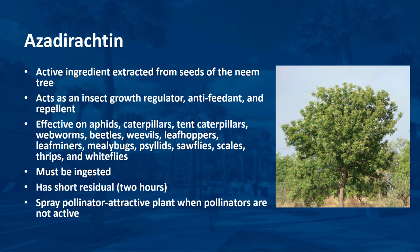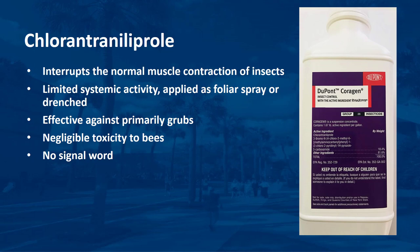Azadirachtin has shown no effect on worker honey bees. Azadirachtin products can be safely used at any time to control pests on plants that are not attractive to pollinators. However, on pollinator-attractive plants, they should be sprayed during late evening, night, or early morning when pollinators are not present, to minimize contact with adult bees that could potentially bring azadirachtin back to the nest where larvae are present. Many azadirachtin products are OMRI listed. Chlorantraniliprole interrupts the normal muscle contraction of insects, resulting in paralysis and death. It has limited systemic activity and can be applied as a foliar spray or through the soil. It is labeled against ornamental pests, primarily grubs. Chlorantraniliprole has negligible toxicity to bees and has no direct impact on natural enemies, so it is compatible with IPM programs.